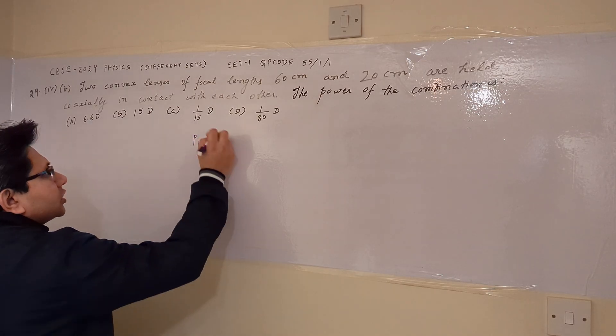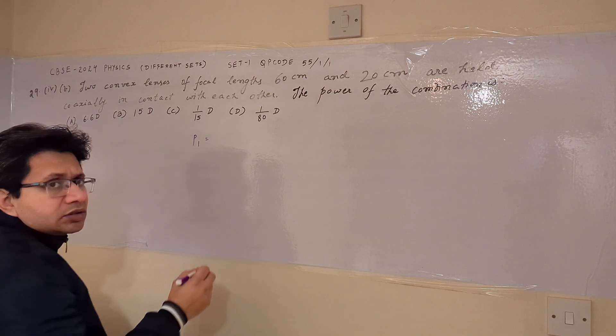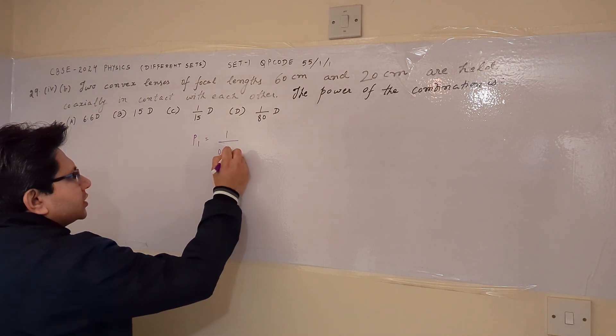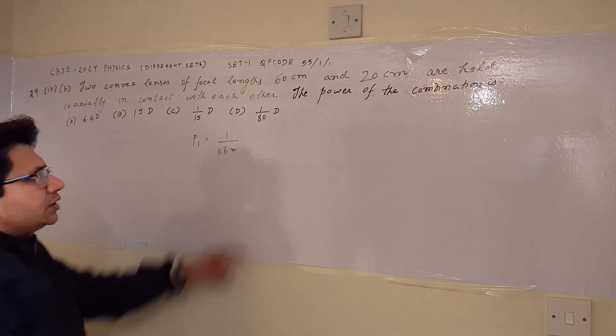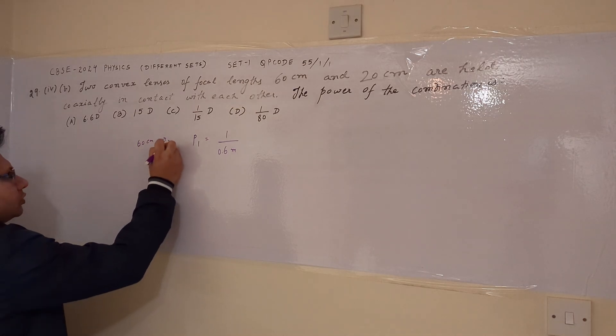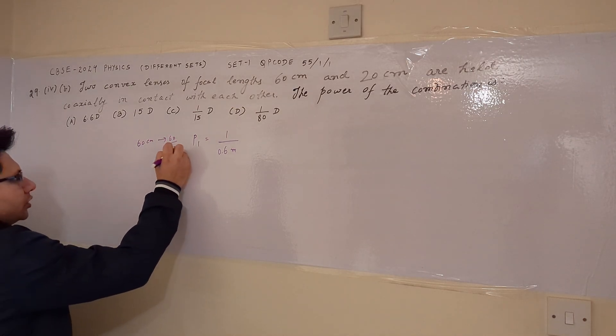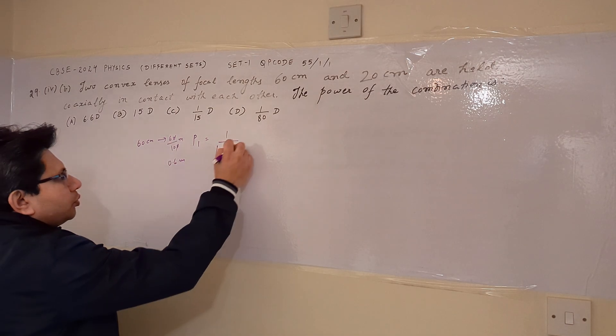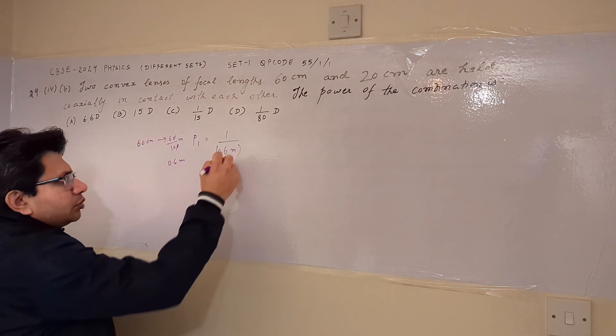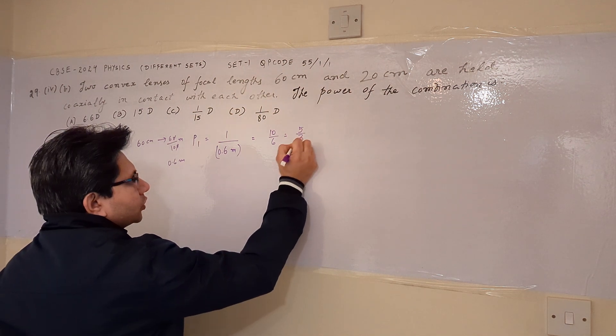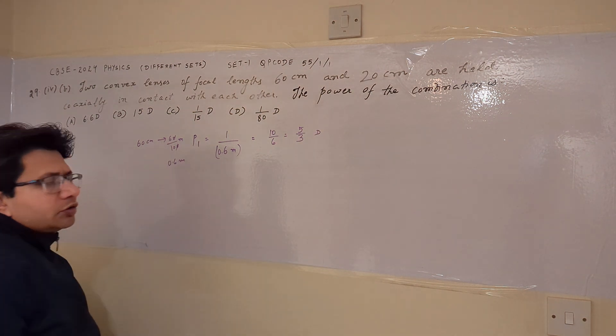For example, for the first lens, the focal length is 60 centimeter, so the power corresponds to 1 upon 0.6 meters. After converting this value, 60 centimeter into meters, we have to divide it by 100, so we get this value as 0.6 meters. So 1 upon F1, which means 1 upon 0.6 meters, which is equal to 10 upon 6, which is equal to 5 upon 3 diopter. So this is the power of the first particular lens.